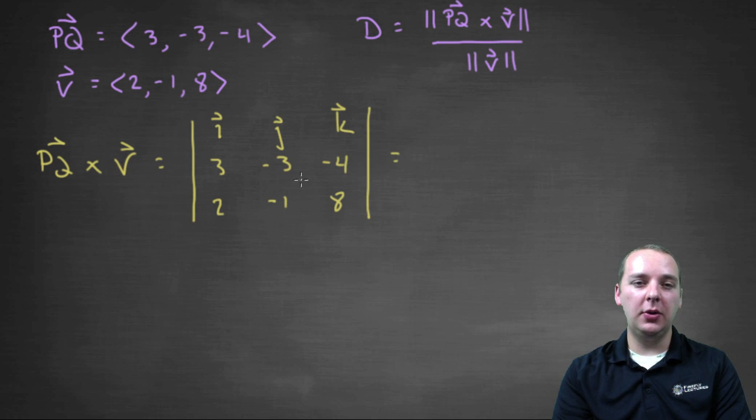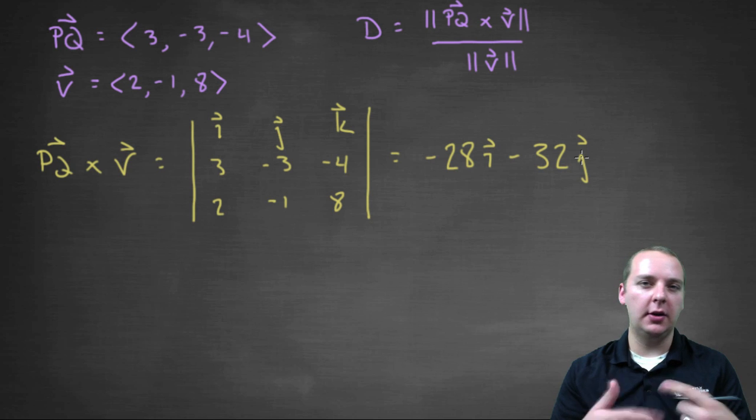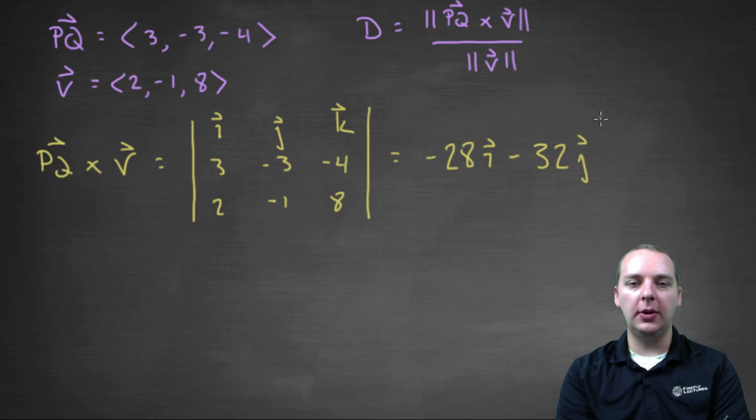The i-th component will be negative twenty-four minus four, so negative twenty-eight i. And then we'll have the j-th component, which will be twenty-four plus eight, that'll be thirty-two. But it'll actually be minus thirty-two, because if you remember when you do cross products, you always change the sign of the j-th component. And then the k-th component will be negative three plus six, that'll be positive three k.